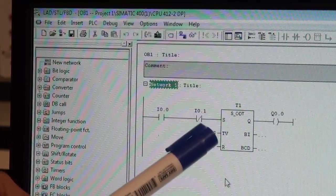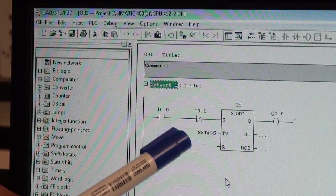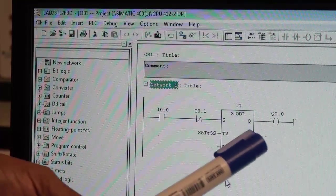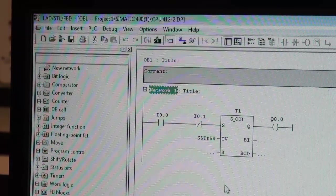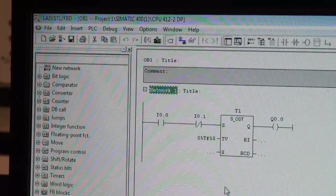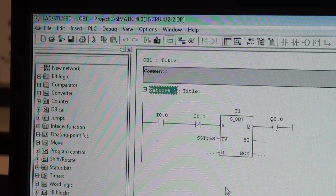There is a timer, this is an on delay timer with a delay time of 5 seconds and an output Q0.0. Now the problem is the input I0.0 is not working properly.